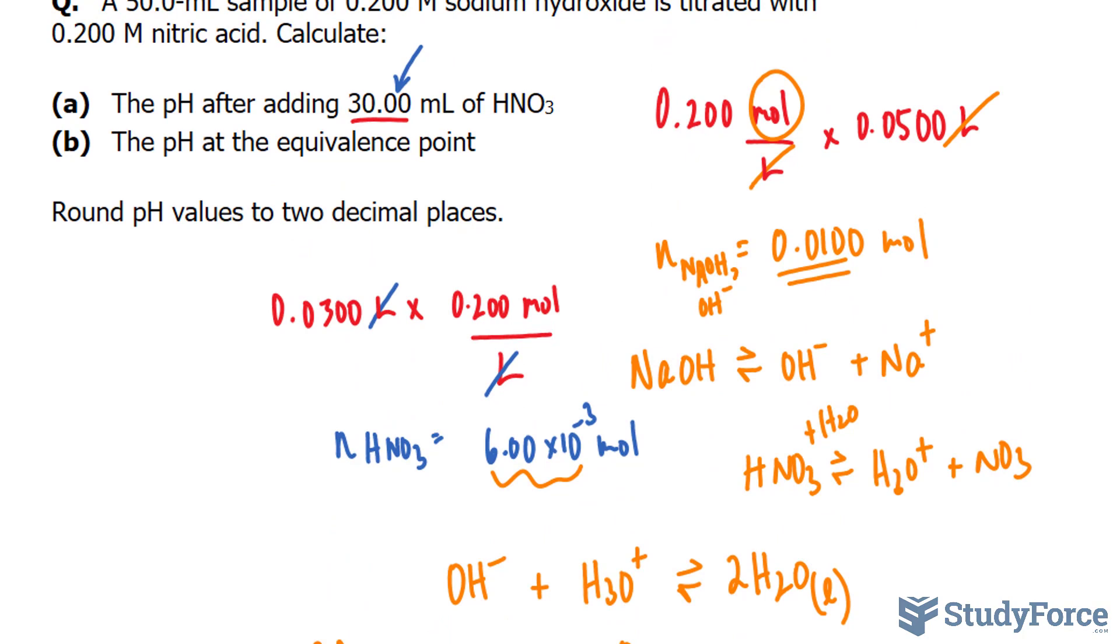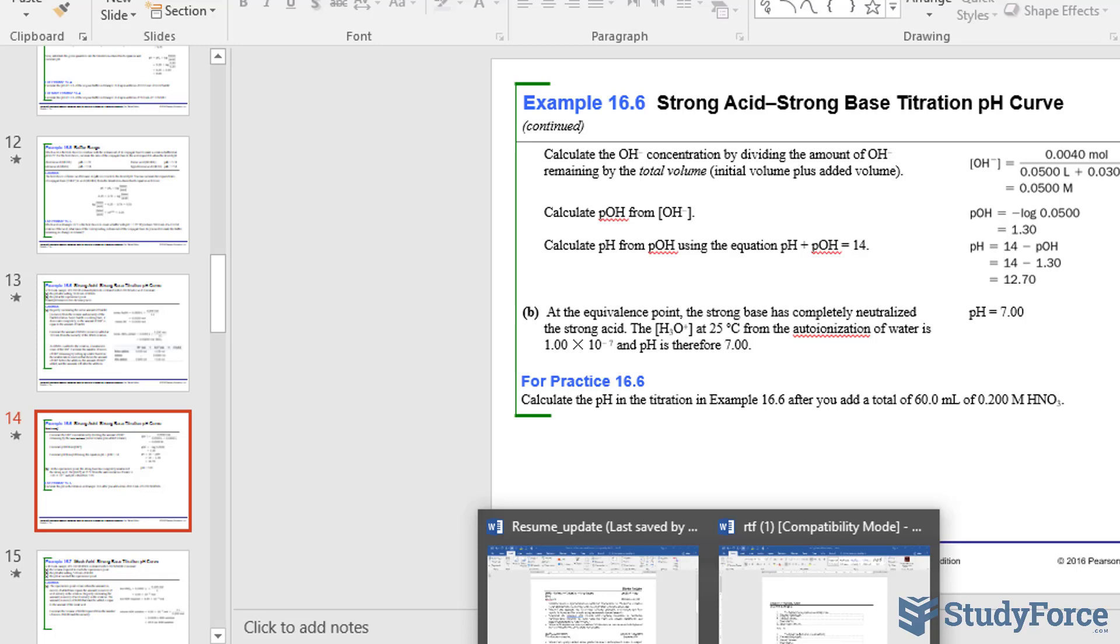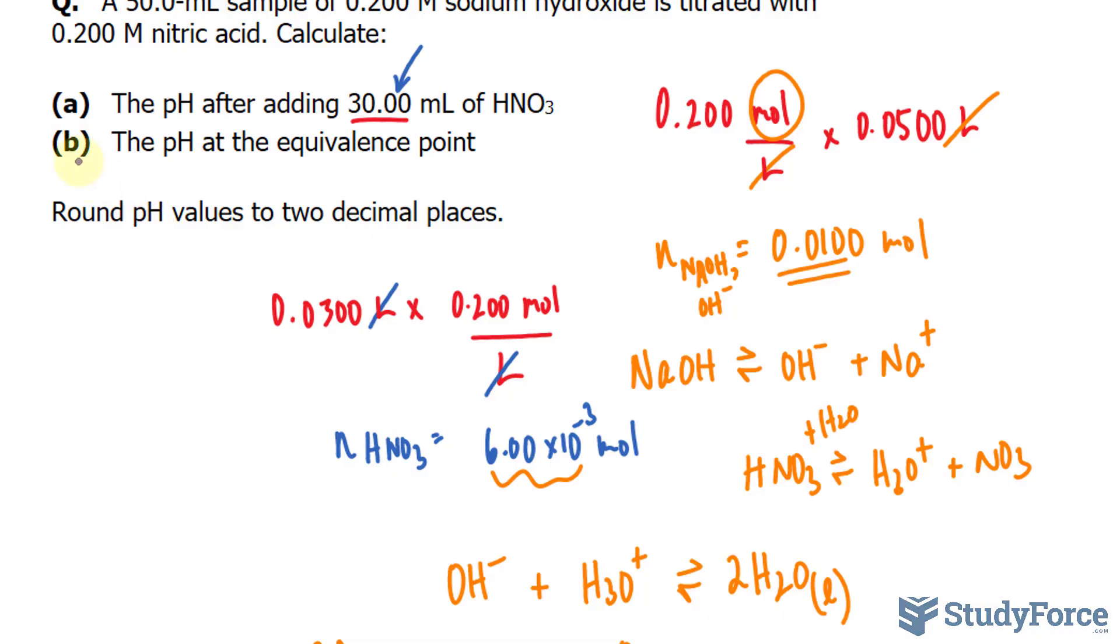Moving on to question B, the pH at the equivalence point. In case you don't know, the equivalence point occurs when the amount in moles of added acid equals the amount in moles of base initially in the solution. At the equivalence point, the strong base has completely neutralized the strong acid. So the concentration of hydronium ions, H3O plus, from the autoionization of water, is 1.00 times 10 to the power of negative 7, and the pH at this point is equal to 7. So the answer here is a pH of 7.00.